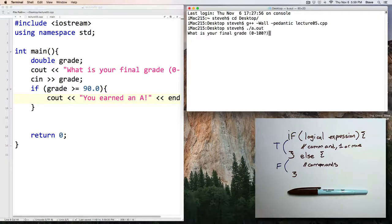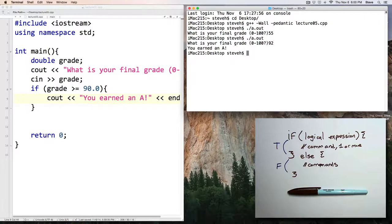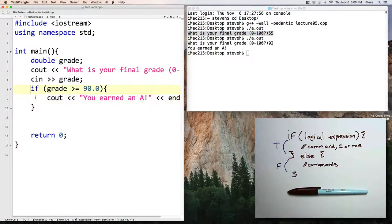And we'll run the program. What is my final grade? 55. Well, let's do some extra credit. And we'll raise that up to a 92. And notice I earned an A. You can see in this case, the program responded differently.